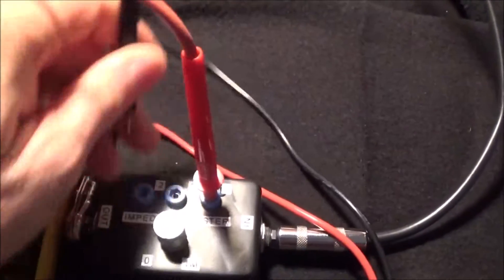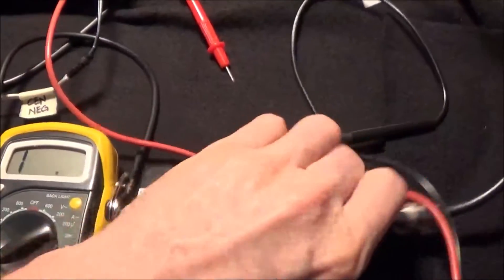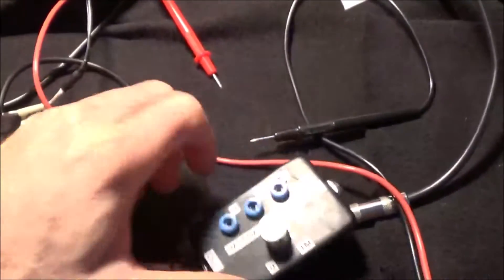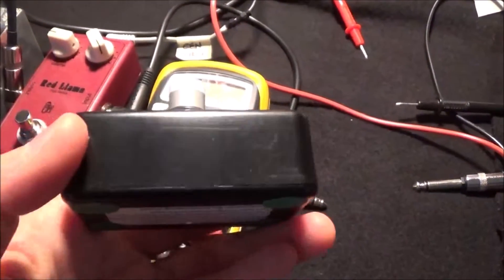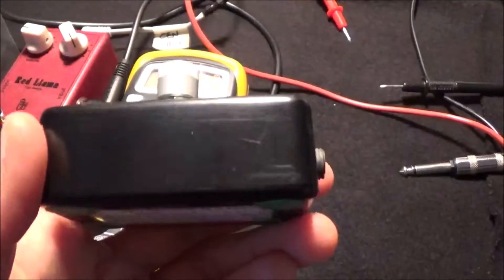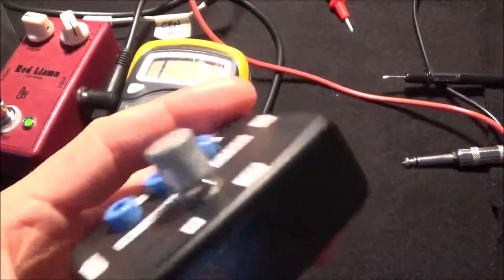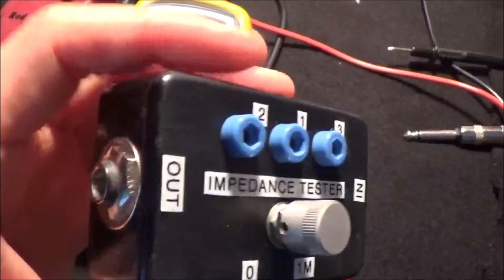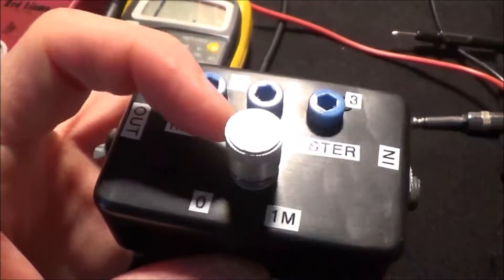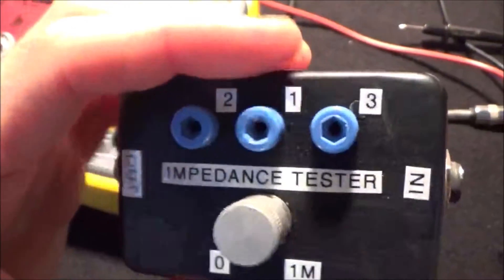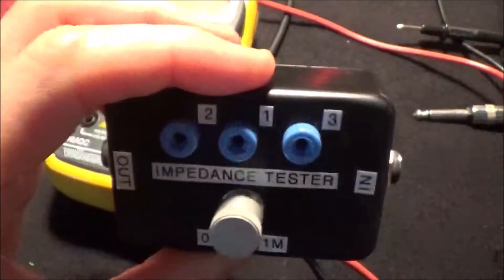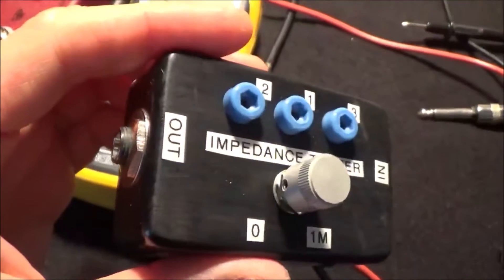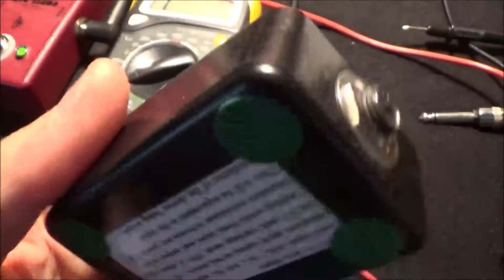This is a real simple little device to make. This is something you can make in about half an hour. This is another Radio Shack plastic enclosure, about 3x2x1 inch. It simply has a couple of mono jacks, a one megaohm pot, and three scope probes.